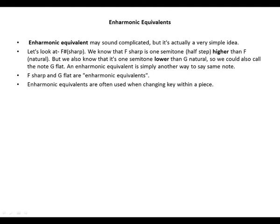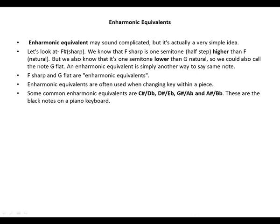Enharmonic equivalents are often used when changing key within a piece. Some common enharmonic equivalents are: C sharp, which is also D flat; D sharp, which is also E flat; G sharp, which is also A flat; and A sharp, which is also B flat. These are the black notes on a piano keyboard.